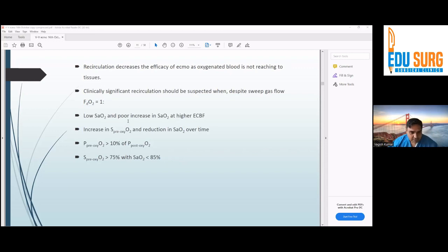You can check the saturation or low PO2 in the radial arterial line. If you increase the pre-oxygenator more than 10% of post-oxygenator, that means the patient is having recirculation.